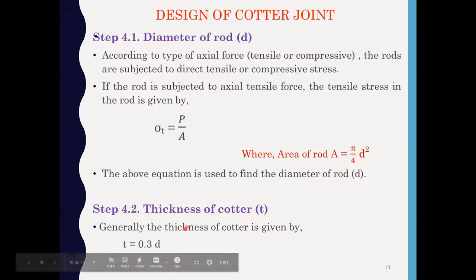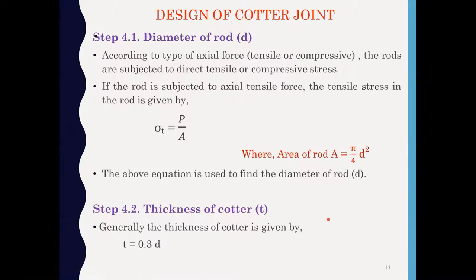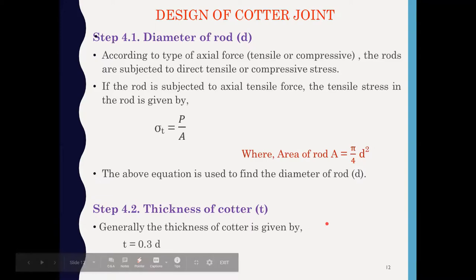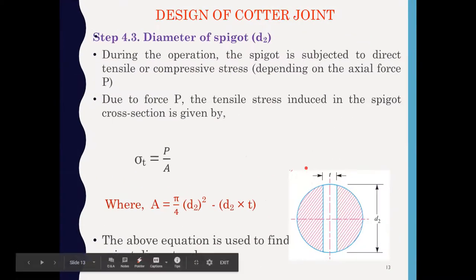Step 4.2: Thickness of the cotter. Generally the thickness of the cotter is taken as 0.3 times the diameter of the rod. This is the empirical formula used to find the thickness of the cotter.